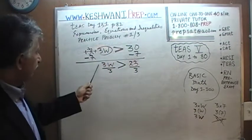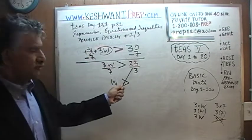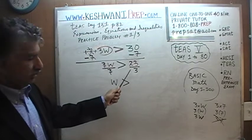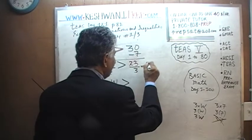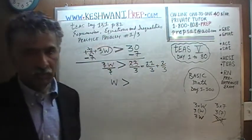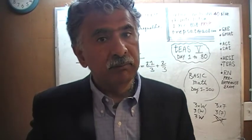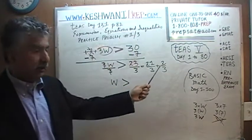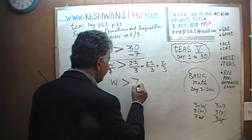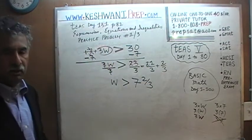The 3 from the top and the 3 from the bottom cancel out. W has to be greater than 23 divided by 3. How much is that? 23 thirds is the same as 21 thirds plus 2 thirds. And 21 divided by 3 is 7. So it turns out the number of weeks has to be more than 7 and 2-thirds weeks.